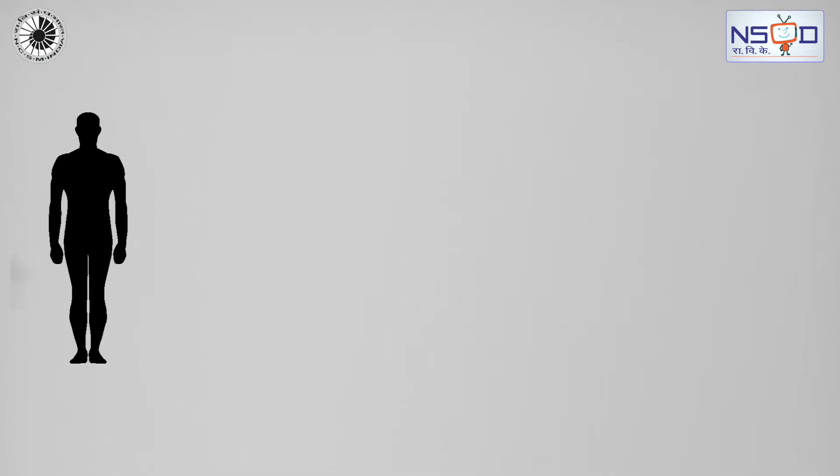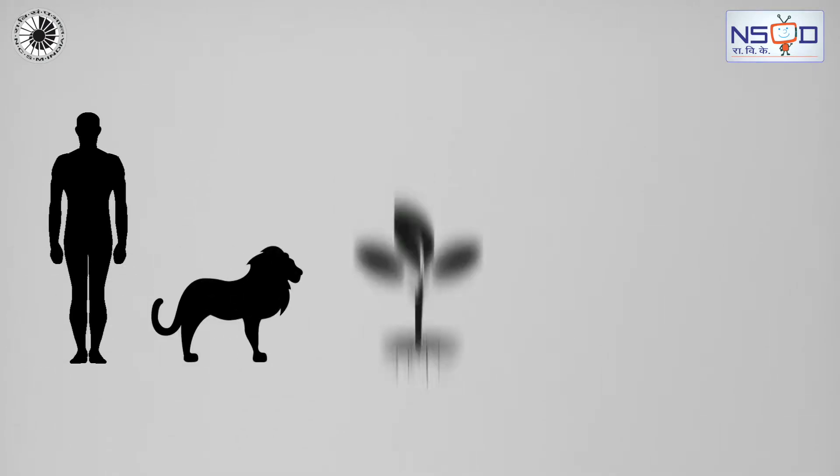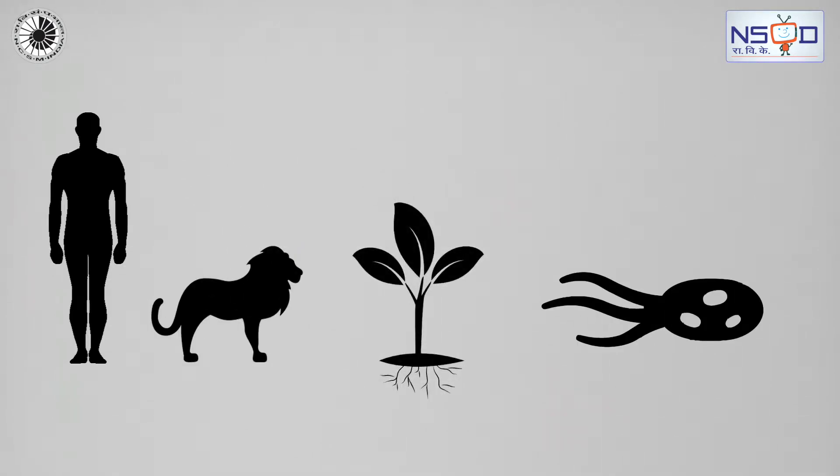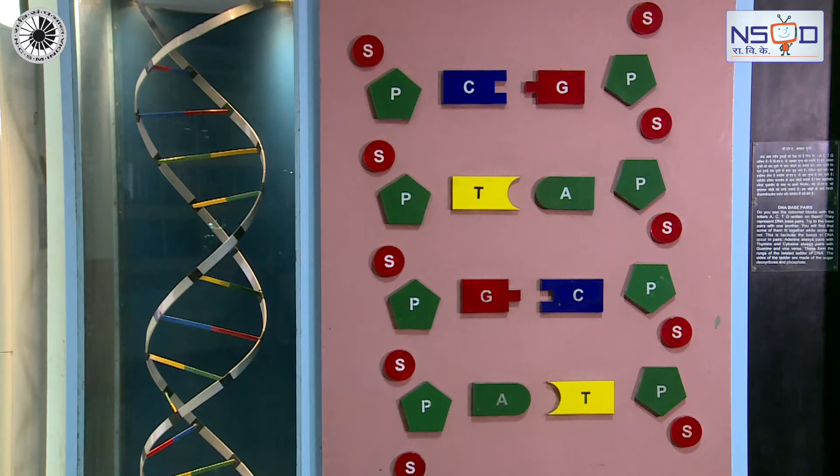All genetic information of a person, animal, plant, or microorganism is stored in the sequence of the bases.